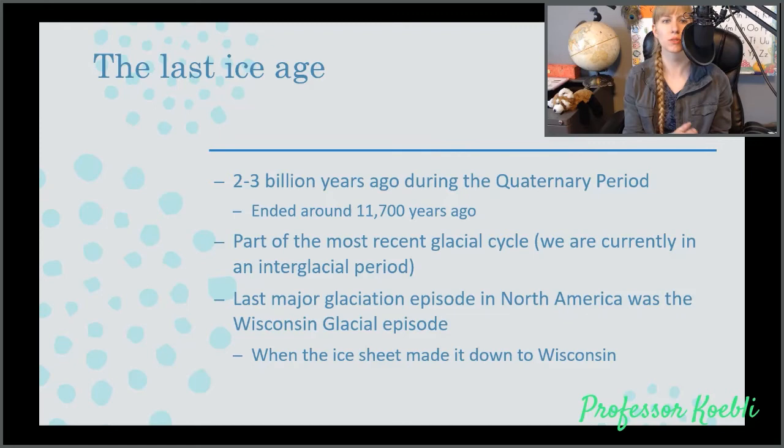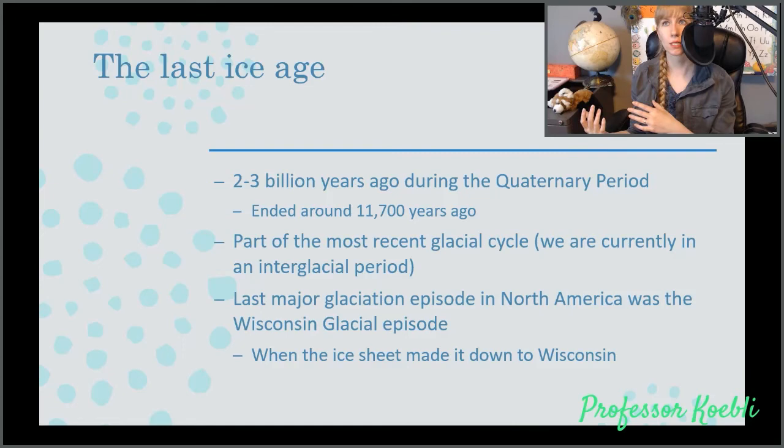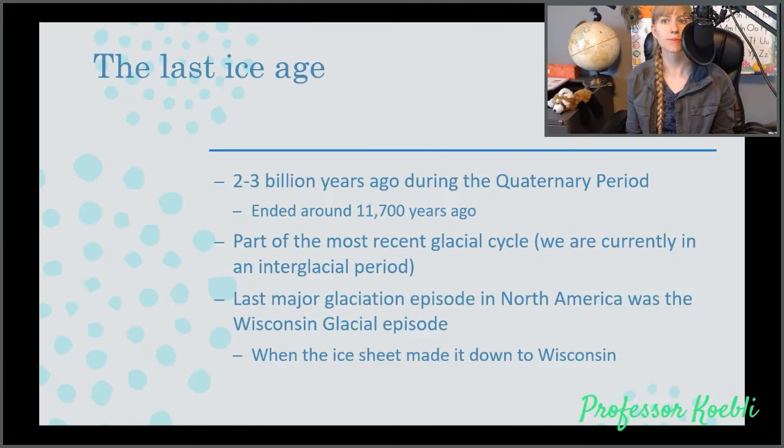The last ice age was two to three billion years ago during the quaternary period and ended around 11,700 years ago. Part of the most recent glacial cycle, we are currently in an interglacial period. The last major glaciation episode in North America was the Wisconsin glacial episode, which means the ice sheet made it down to Wisconsin. Currently, we do have ice sheets in both of the poles, the North Pole and the South Pole. We also still have glaciers in different mountain ranges such as the Andes and there is still glaciers in Mont Blanc in France and in the Alps. In the Himalayas, there are still glaciers. They're smaller, they are receding. It is because of the recession of glaciers or ice sheets that we get things like icebergs.